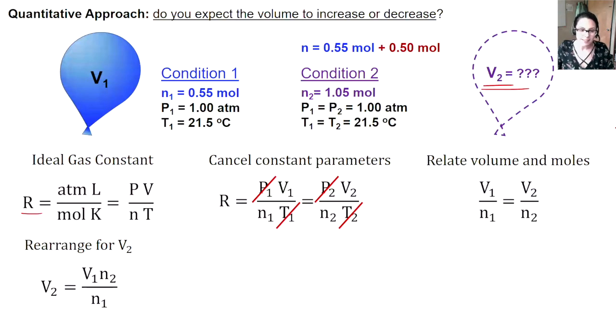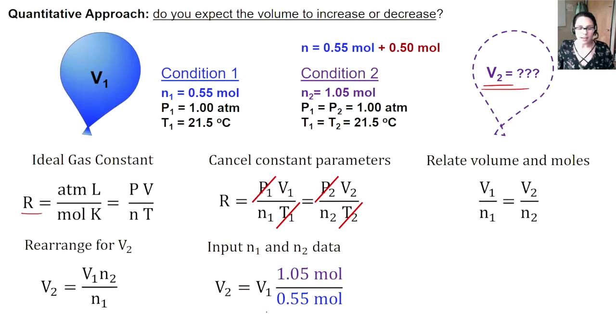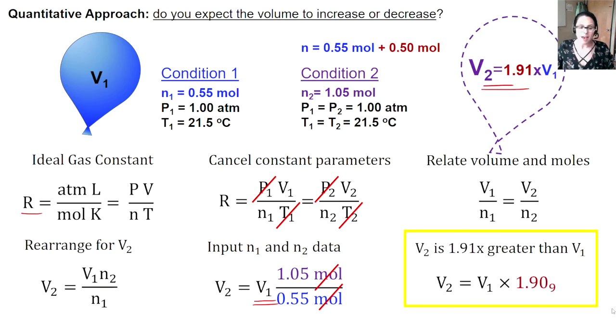Now we can plug in the information that we're given. We know our final and initial amount of moles of helium. Our N2 is 1.05 moles and our N1 is 0.55 moles. Even though we aren't provided with the initial volume, we can still calculate that our volume V2 is going to be 1.91 times greater than V1, leading us to our same conclusion that volume is expected to increase.